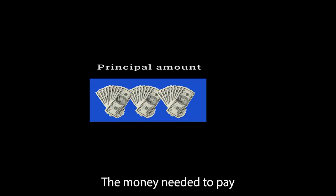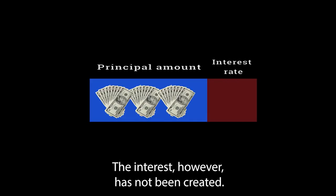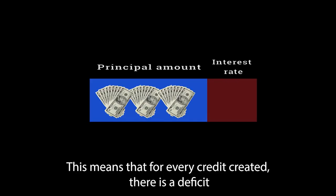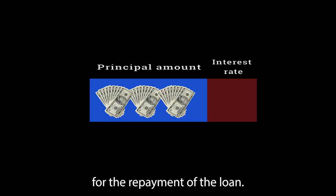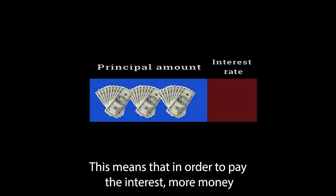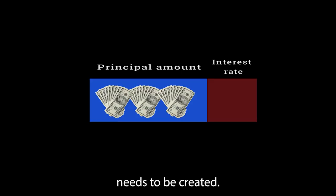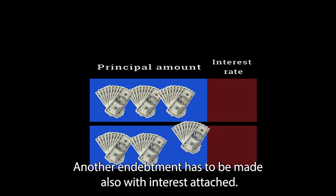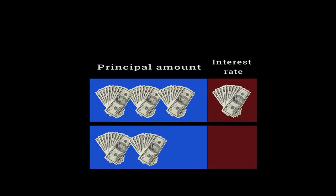The money needed to pay the interest, however, has not been created. This means that for every credit created, there is a deficit for the repayment of the loan. This means that in order to pay the interest, more money needs to be created. Another indebtment has to be made, also with interest attached.